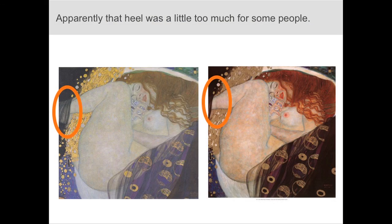For instance, some people just don't reproduce the whole painting. On the left, Donna has a heel. On the right, she doesn't. Why not? Maybe they thought she should have painted a square painting.